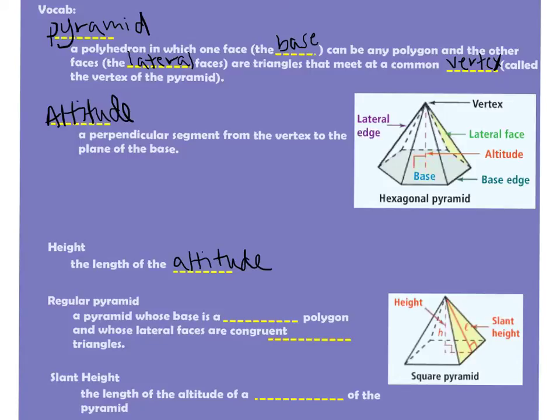Now in a regular pyramid, we have a pyramid whose base is a regular polygon. So we may have pyramids where our shapes are not regular at the bottom for our base. We have regular polygon and whose lateral faces are congruent isosceles triangles. So we will always have isosceles triangles within a regular pyramid.